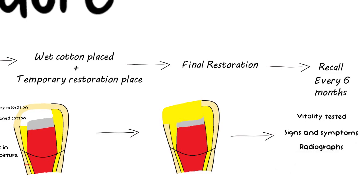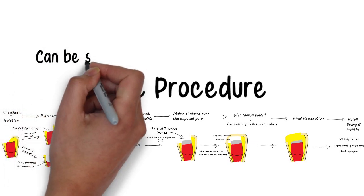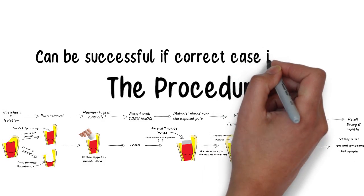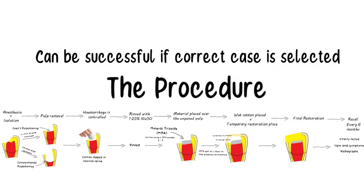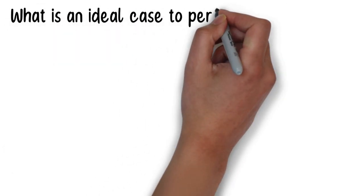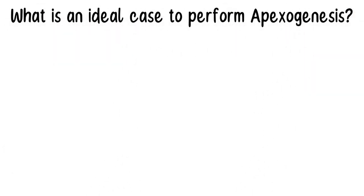Apexogenesis can be very successful if correct case is selected and if the procedure is done correctly. Hence, case selection for Apexogenesis is also a very crucial part. That brings us to our next heading: what is an ideal case for Apexogenesis? Because not every developing tooth having a pulp exposure with an open apex is ideal for Apexogenesis.